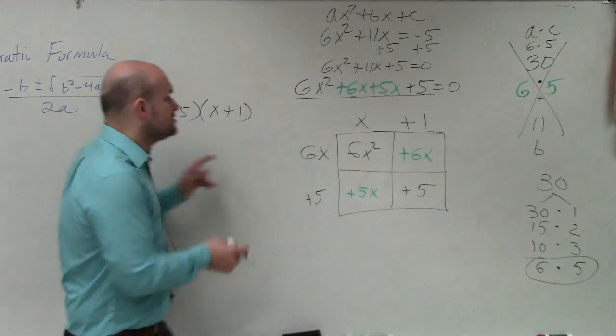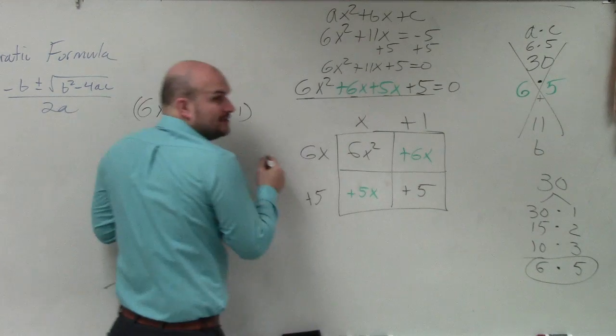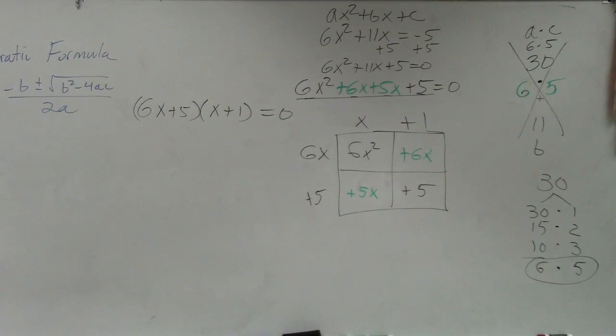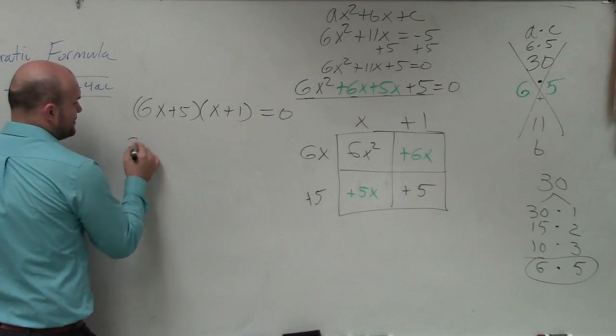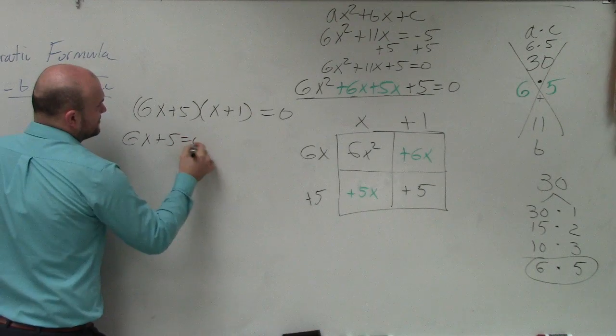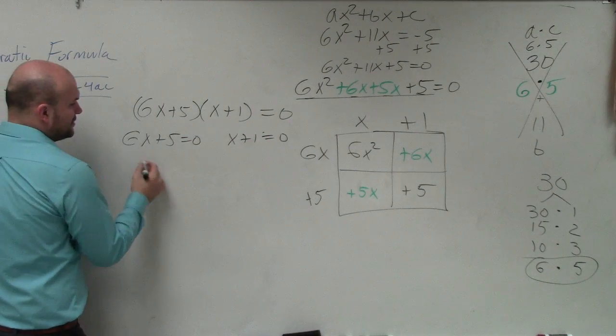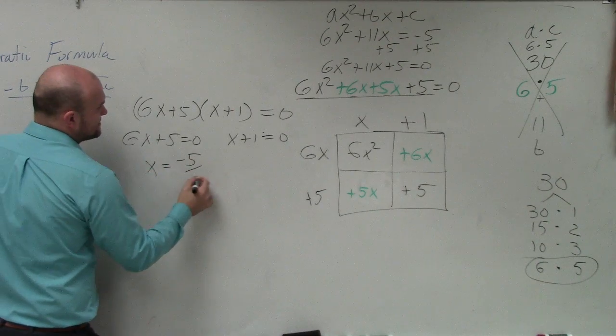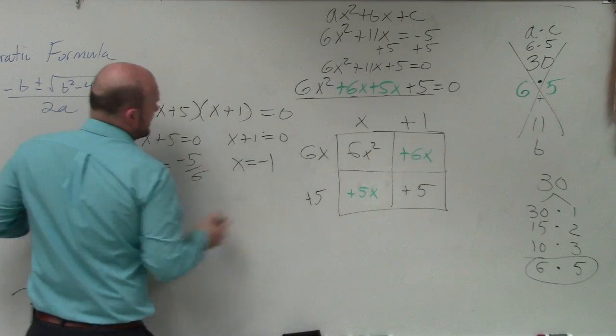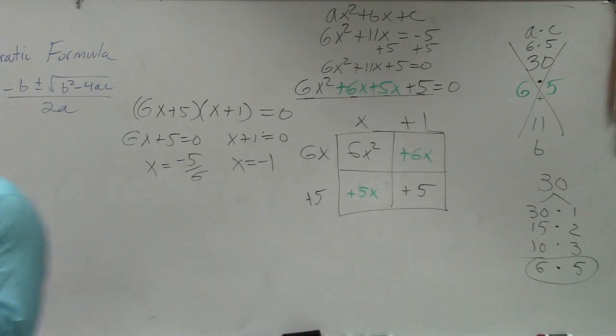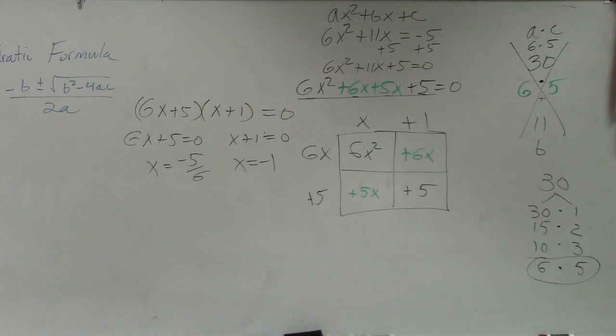Okay. So, if this equation is set equal to 0, therefore, you're going to set the exact same equation equal to 0. So, now, you can apply the 0 product property. You can say 6x plus 5 equals 0, and x plus 1 equals 0. There you go. Now, you can go and solve x equals negative 5 sixths, and x equals negative 1. Okay. Now, let's take a similar.